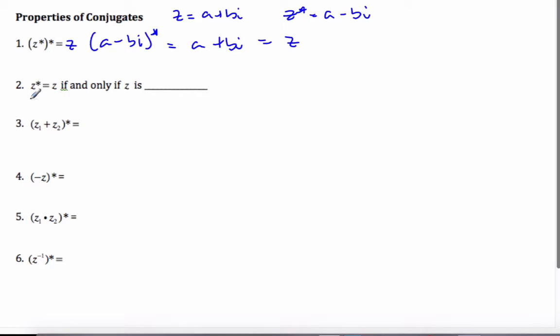The next property says that if these two things equal each other, that's true if and only if z is purely, purely a real number, with no imaginary parts. A real number with no imaginary parts, or you could say that b equals zero.